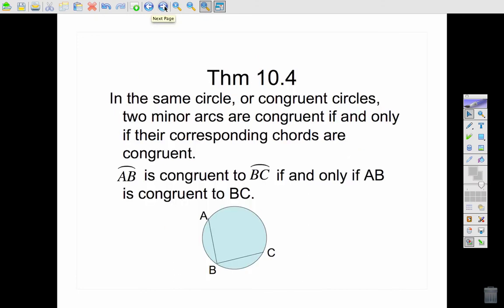Theorem 10-4, in the same circle or congruent circles, minor arcs are congruent if their corresponding chords are congruent. So if I were to mark on this diagram, if AB and BC are congruent, then arc AB and arc BC are also congruent.